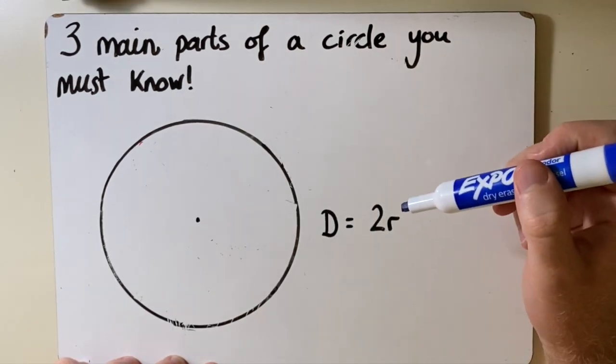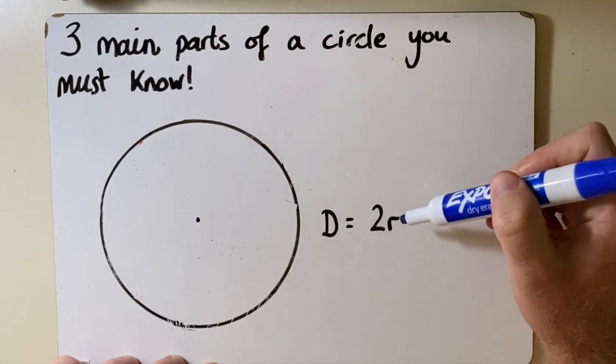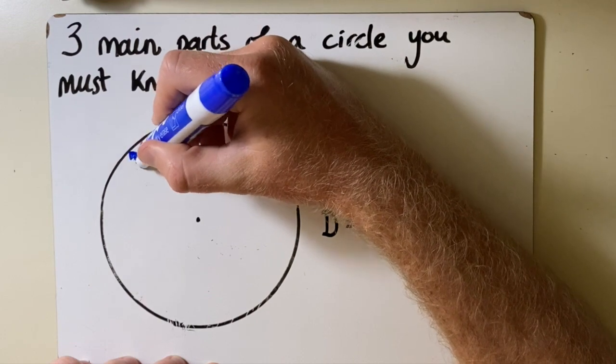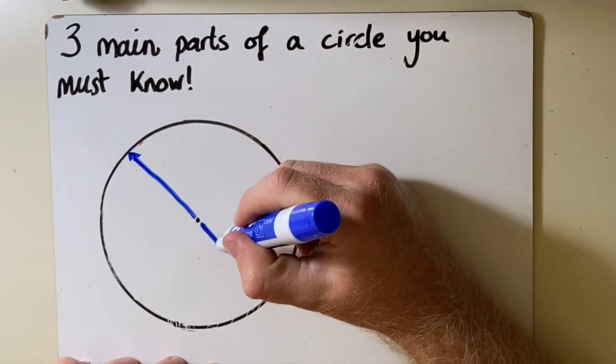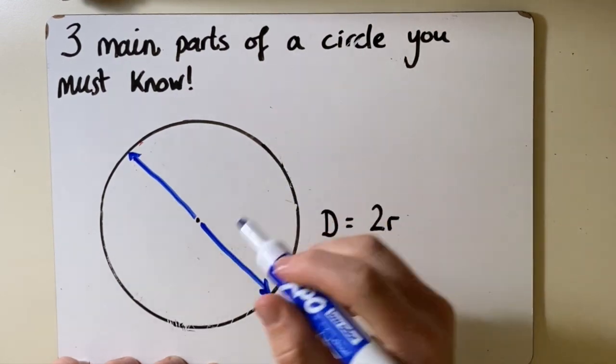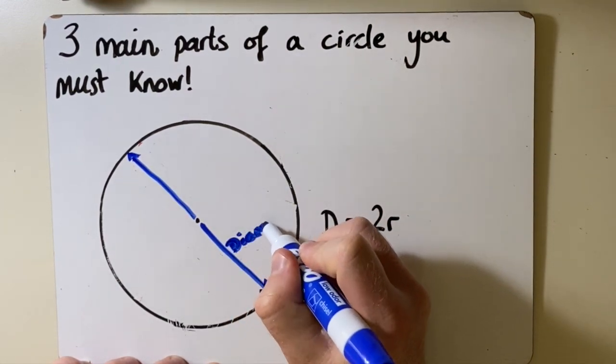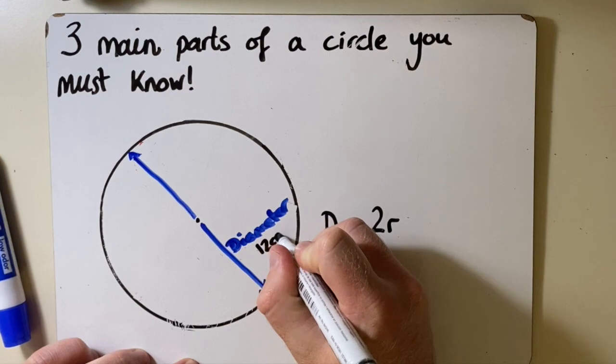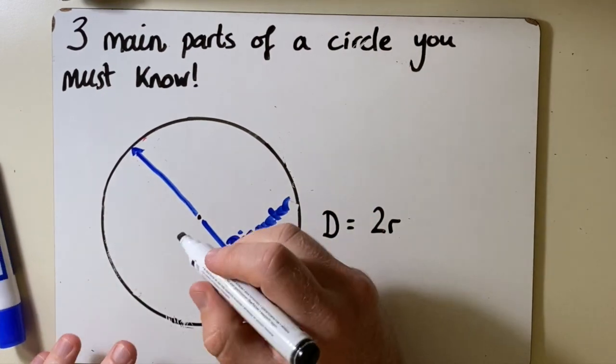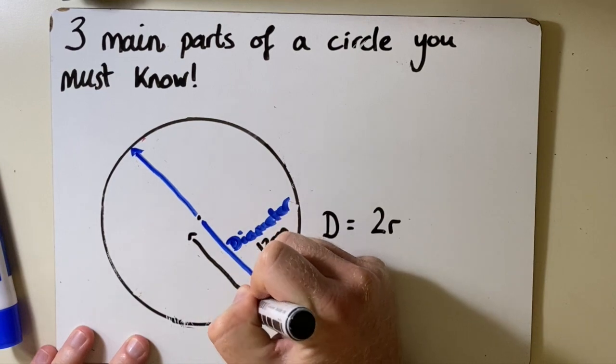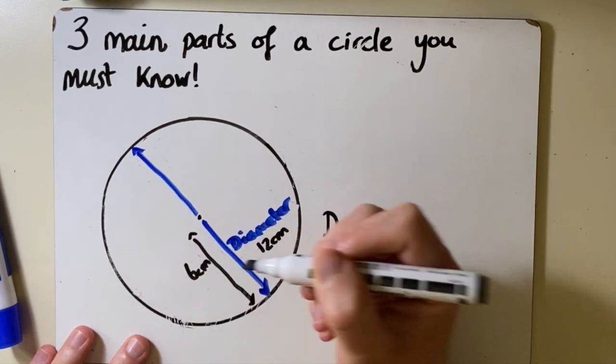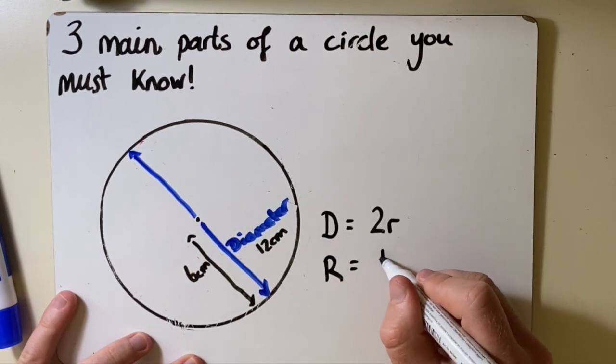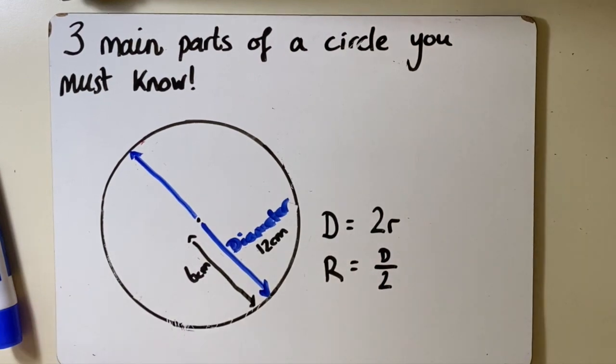Now if we know that the diameter is twice the amount of the radius, we must also know that the radius is half of the diameter. So if this is the diameter and I know that the diameter is 12 cm, I know that half of this, half of the diameter, would be 6 cm. And we can write that the radius is the same as the diameter divided by 2.